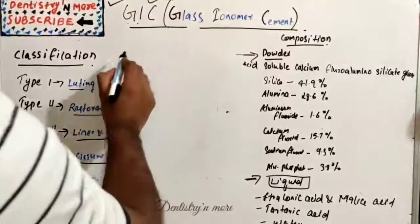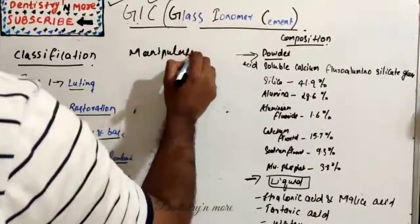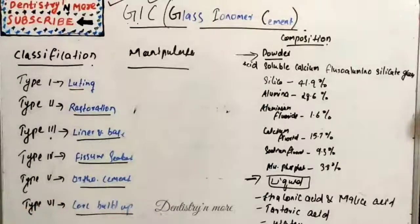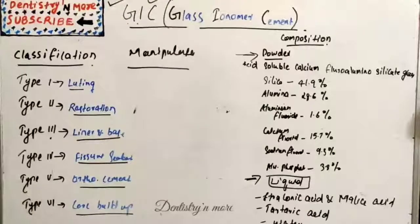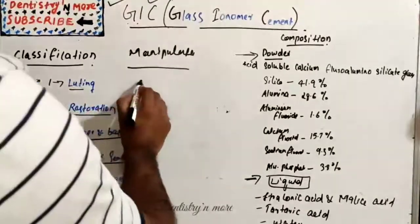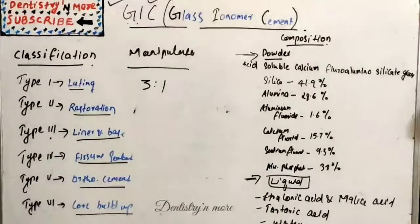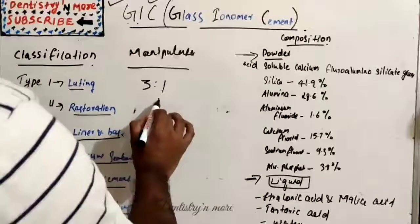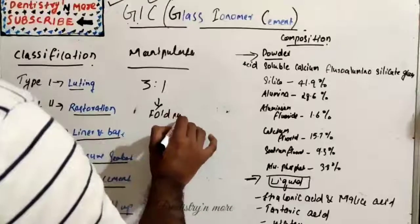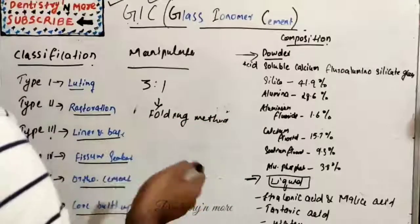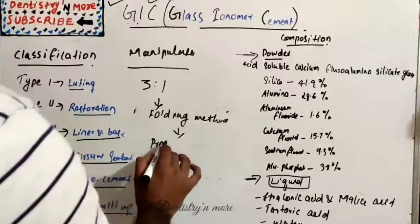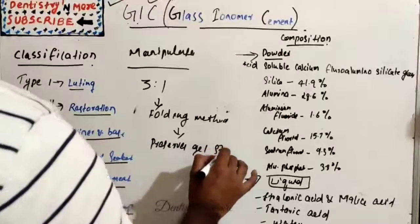Next is manipulation: how do we mix this? The enamel and dentin should be first cleaned and should be swabbed with polyacrylic acid for 5 seconds, then after conditioning the surface should be isolated. Then we need to mix the powder and liquid by 3:1 ratio. The first increment is incorporated rapidly to produce a homogeneous milky consistency, then mixing is done in folding technique. This folding method is done to preserve the gel structure.